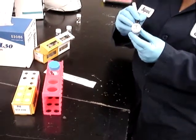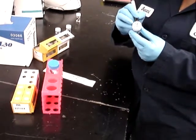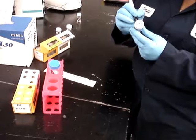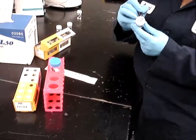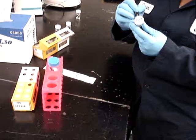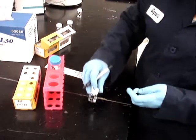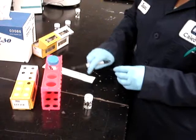First, a vial of preservative is labeled with the sample information and the date, and then we're going to collect biofilm from a corrosion coupon.